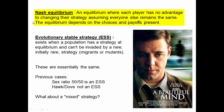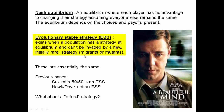In a Nash equilibrium, you have a group of individuals with strategies where no individual has an advantage to changing their strategy in that population. This is a little bit different from an evolutionary stable strategy, which exists when a population as a whole has a strategy at equilibrium and can't be invaded by a new, initially rare strategy — such as migrants from somewhere else with different behavior, or mutants with genetic mutations causing them to play a different strategy. When a population has an ESS, it's resistant to invasion and will stay pretty much the same.